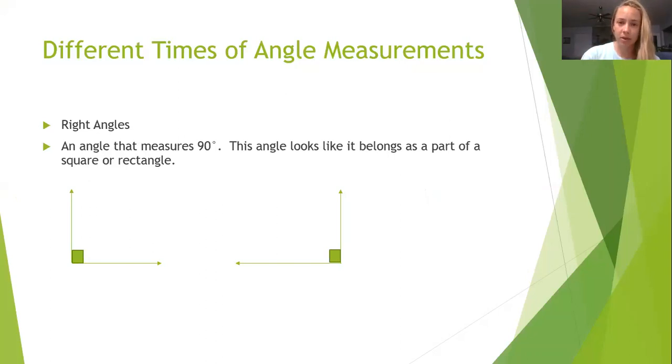A right angle has a measurement of 90 degrees and it looks like it belongs to a part of a square or a rectangle. Typically when you see a right angle it will have a little square inside the vertex where the two lines meet to form the angle, because this square is going to show you that it's part of a right angle, which is in a square or a rectangle.